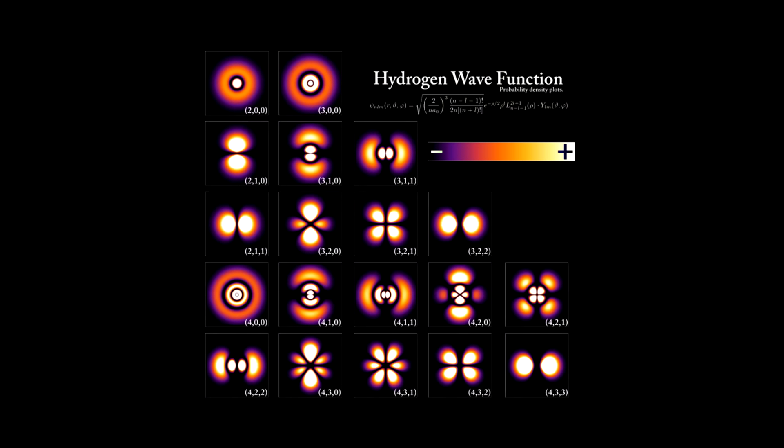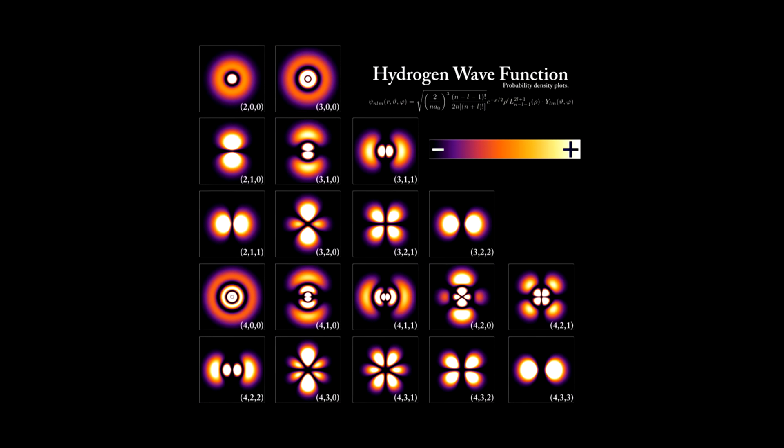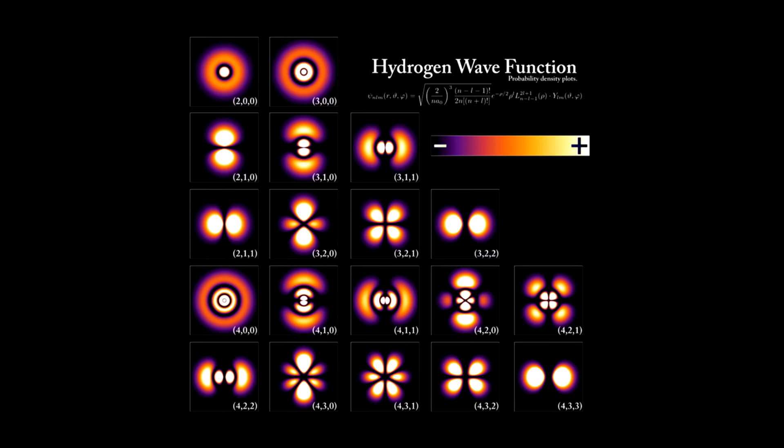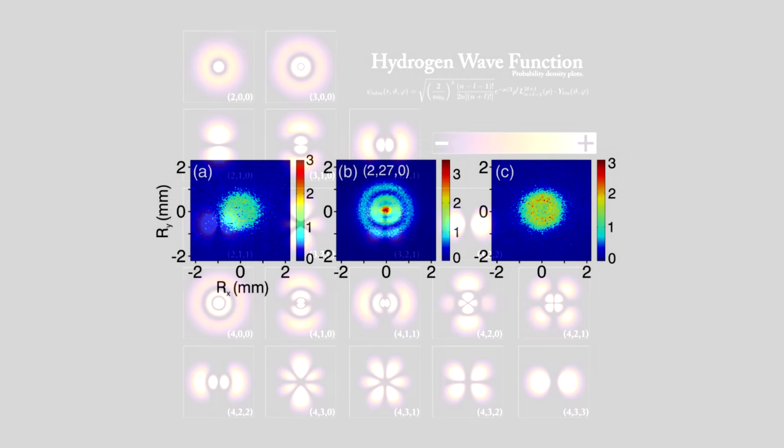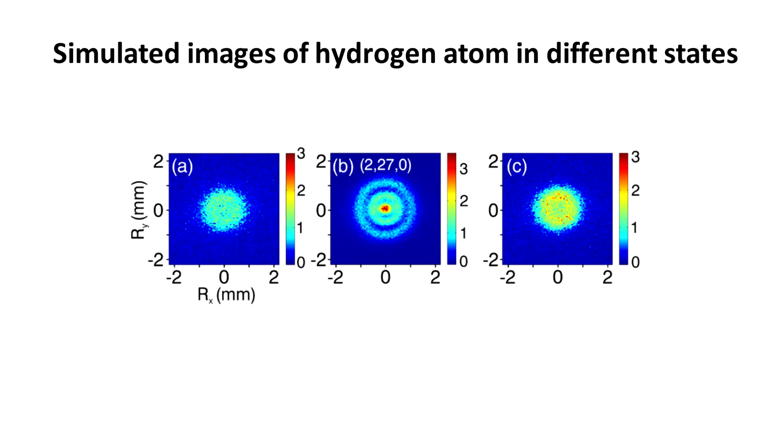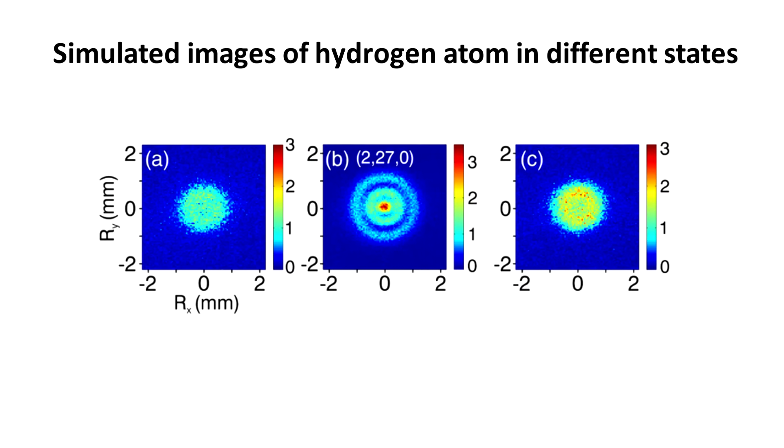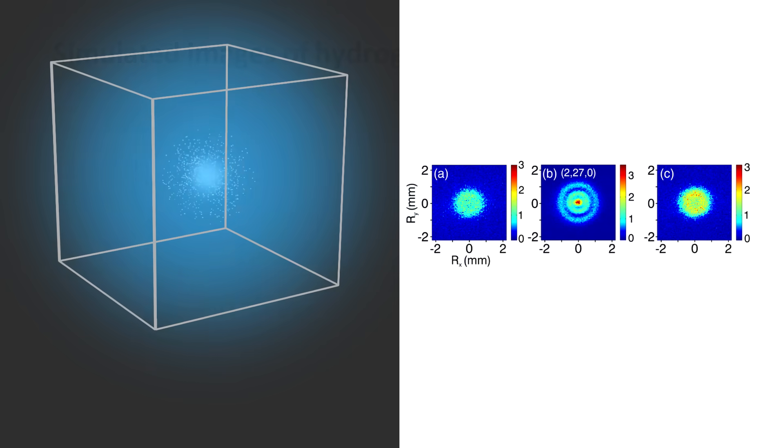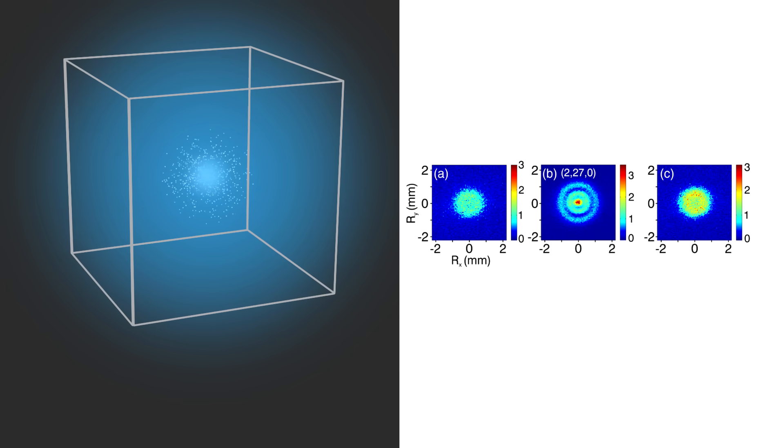Note that there are other shapes that the cloud of the hydrogen atom could take as well, depending on the energy level and the quantum state of the electron. But here are actual images of a hydrogen atom taken by an international team of researchers in 2013. So this is definitive proof that our 3D model is likely correct.